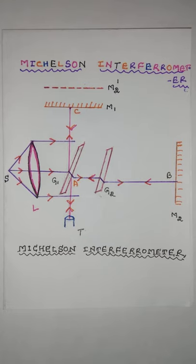This device is based on the principle of division of amplitude. The amplitude of the light beam from an extended source is divided into two parts of equal intensity by partial reflection and refraction. These beams are sent in two perpendicular directions. The two beams are finally brought together after reflection from plane mirrors to produce interference fringes.